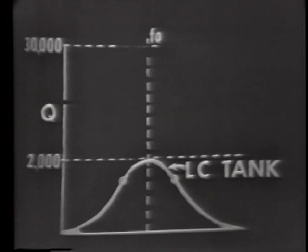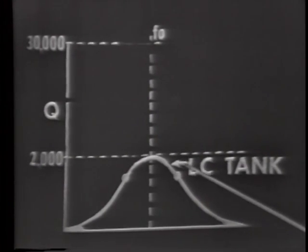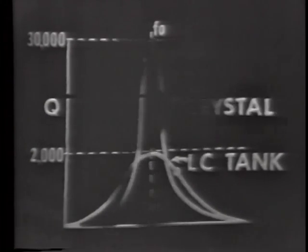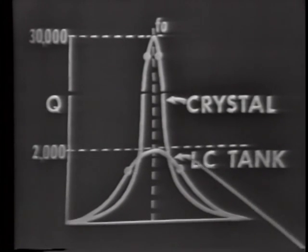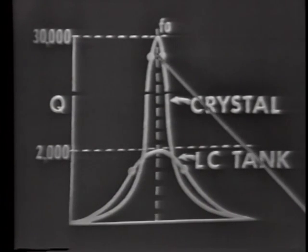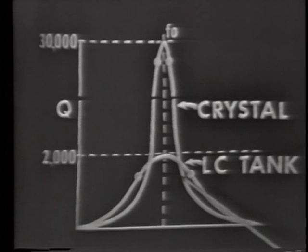Just because this vibrating crystal is equivalent to a series LC tank circuit, don't think that it's the same thing, because the crystal will be far superior to the LC tank circuit. The Q of the crystal circuit is many times greater than that of the LC circuit. The Q of an LC tank circuit is seldom greater than 2,000, whereas the Q of the crystal is sometimes as great as 30,000. Because of the high Q, the crystal has better frequency stability since its bandwidth is much more narrow than that of the LC tank circuit.